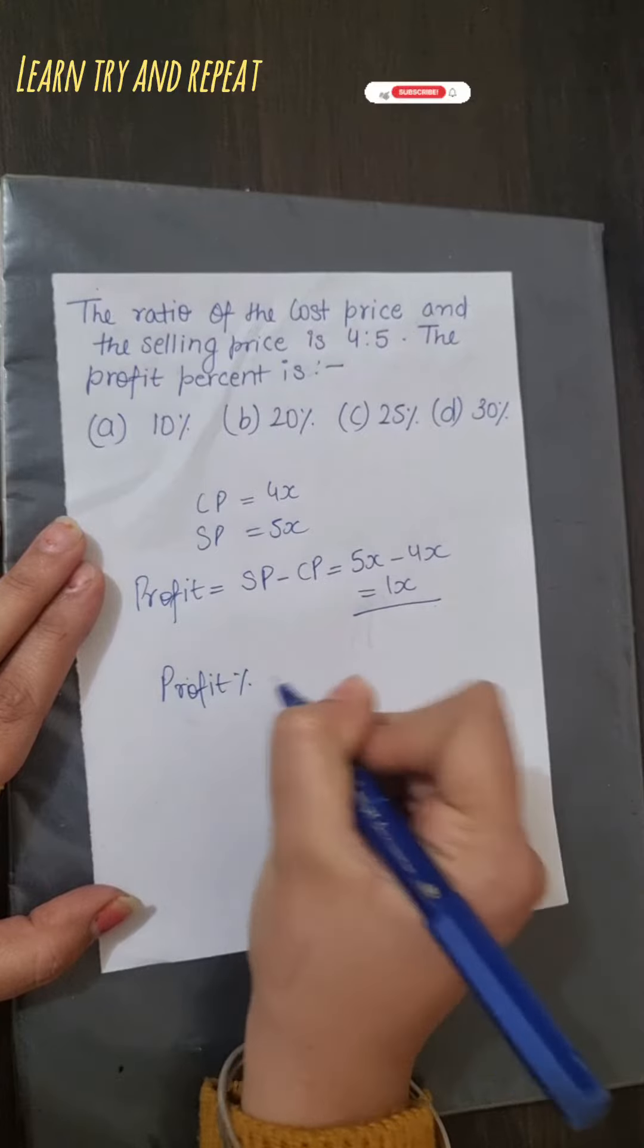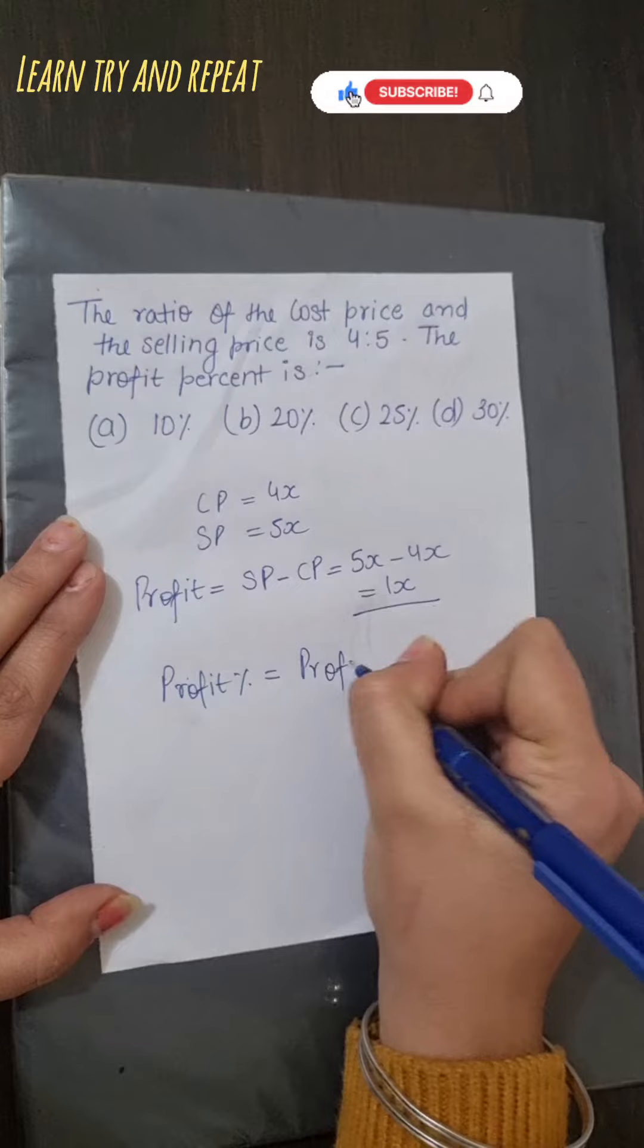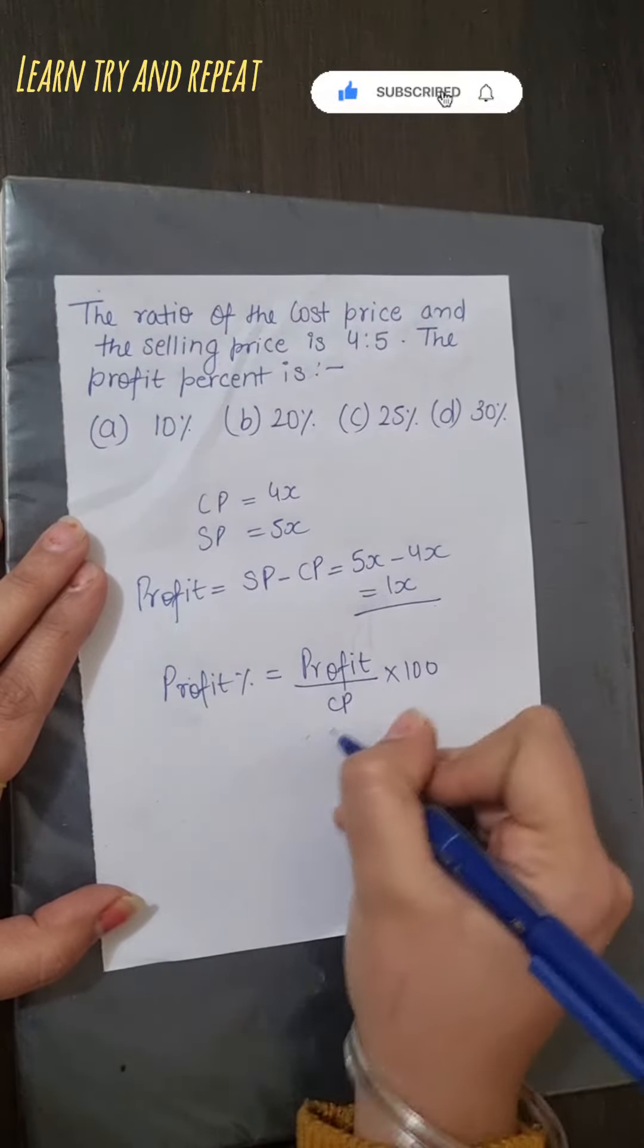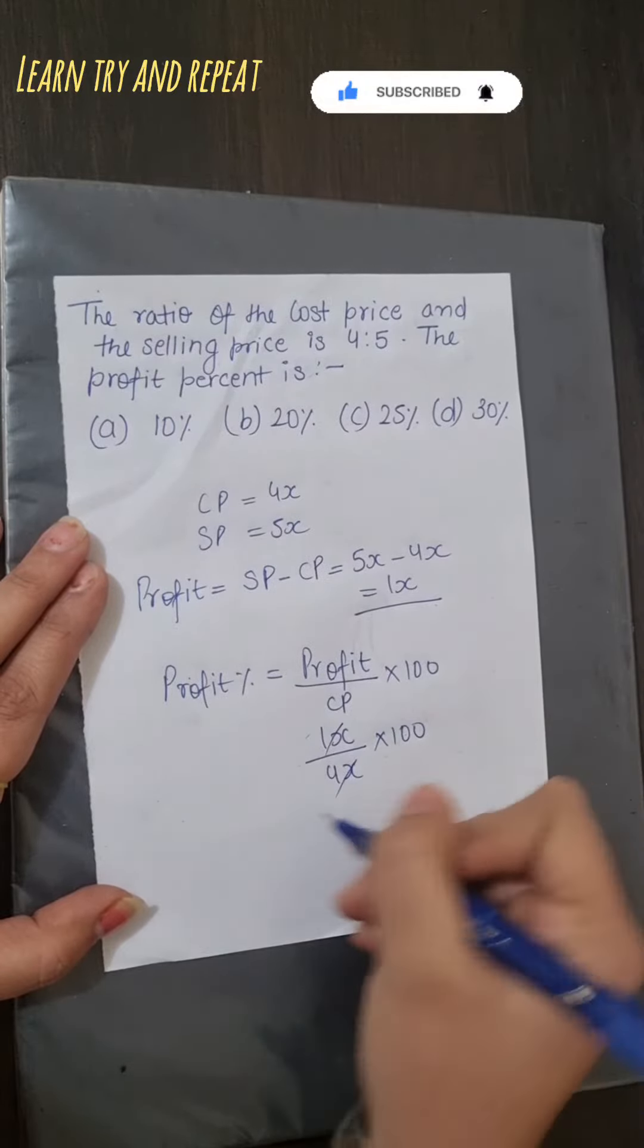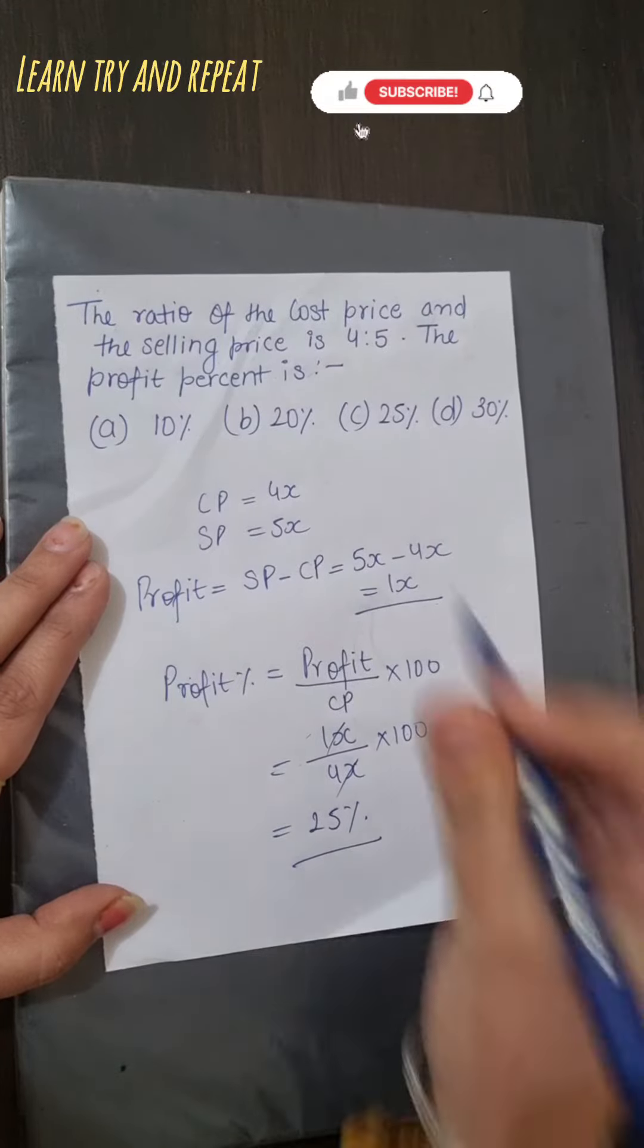The formula to calculate profit percentage is: profit divided by cost price into 100. This is 1x, and your cost price is 4x, into 100. When you calculate, you will get 25 percent as your answer. So option C will be your answer.